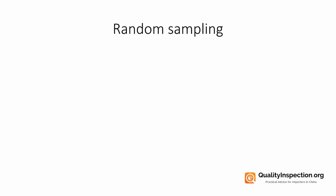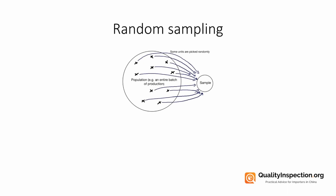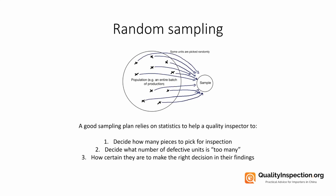Let's look at random sampling in a bit more detail. Here's a visual representation: on the left in the large circle you've got the population — in this case an entire production batch of products. The little X's throughout represent units picked randomly by your inspector, and those go into the sample on the right, which is what gets checked for quality. A good sampling plan relies on statistics to help a quality inspector firstly decide how many pieces to pick, secondly decide what number of defective units is too many, and thirdly know how certain they are to make the right decision.